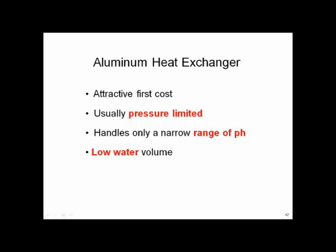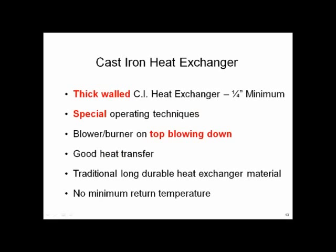Cast iron is also used. We know cast iron with carbonic acid is going to rust — but how can you get away with it in a condensing boiler? The answer is simple: you make the cast iron thick. The vendors using this approach make heat exchangers thick enough to give you a 10-year warranty — it won't rust through in 10 years. It will rust and form some corrosion damage, but they do some special operating techniques to blow condensate off, and there's no minimum return water temperature requirement. They're fairly durable as long as you accept they will corrode over time.